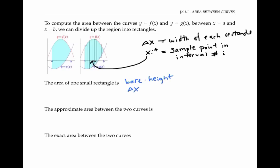But the height is different for each rectangle. If I focus in on rectangle number i, it stretches all the way up to f of the sample point f of x sub i star, and it stretches all the way down to g of that x sub i star. So the height of that rectangle is the gap between f of x and g of x at that sample point — in other words, it's the difference f of x sub i star minus g of x sub i star.